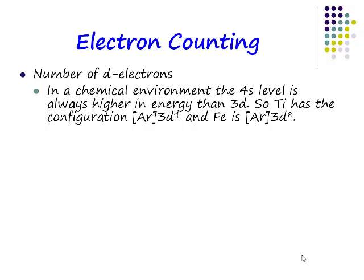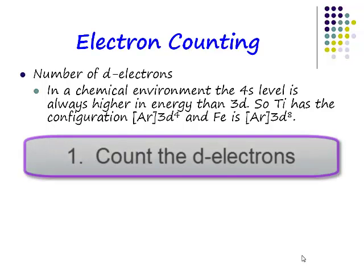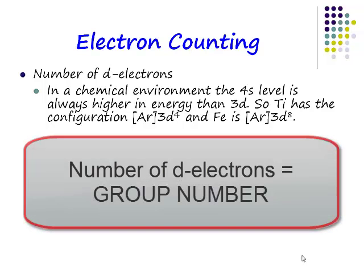Now first of all, we need to work out how many d-electrons we've got in our system. Now, how difficult can that be? Well, it's the group number.